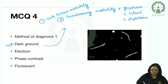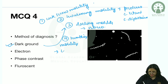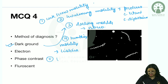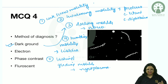Darting motility is seen in Vibrio cholerae. Tumbling motility is seen in Listeria monocytogenes. Lashing or gliding motility is seen in Mycoplasma. These are special kinds of motility that may be asked as one-liner questions.